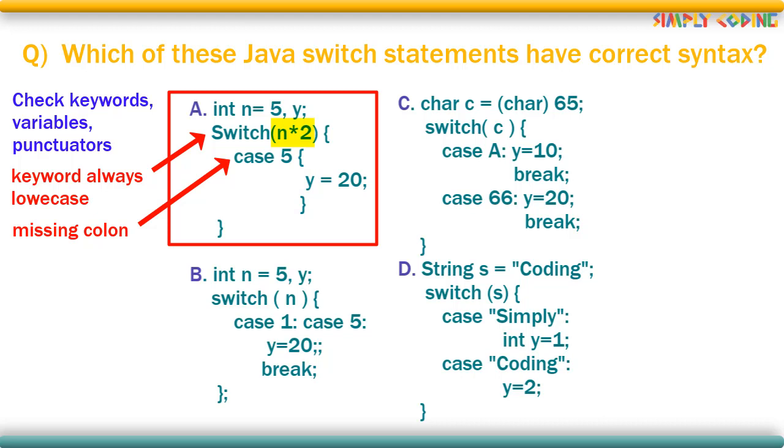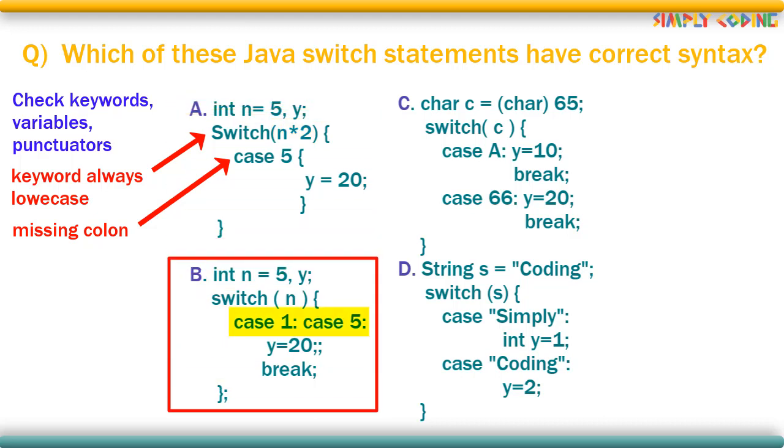Also note it is perfectly legal to put an arithmetic expression in switch. In the next switch block, there are two case statements in a row, which is again perfectly legal in Java as long as each of them has a colon in the end. If you think these extra semicolons after this statement or switch block will cause compilation error, you are wrong. You can put as many semicolons as you want at the end of the switch block and it will not cause any error. However, try putting a semicolon after the break and it will certainly give compilation error. So this switch block has no errors.